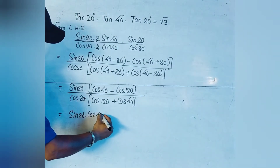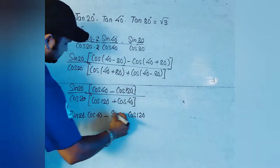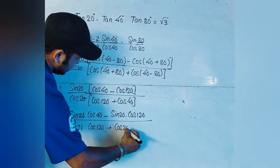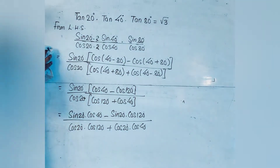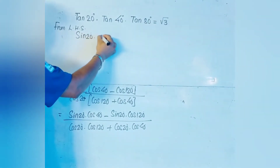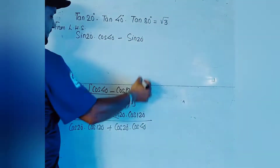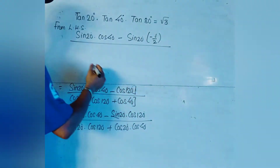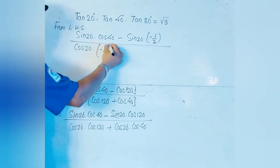We multiply by sin20° in the numerator and cos20° in the denominator. In the numerator we get cos120° − cos40°, multiplied by sin20°. In the denominator we get cos20° × cos120° + cos20° × cos40°. The numeric value of cos120° is −1/2, so we substitute that.